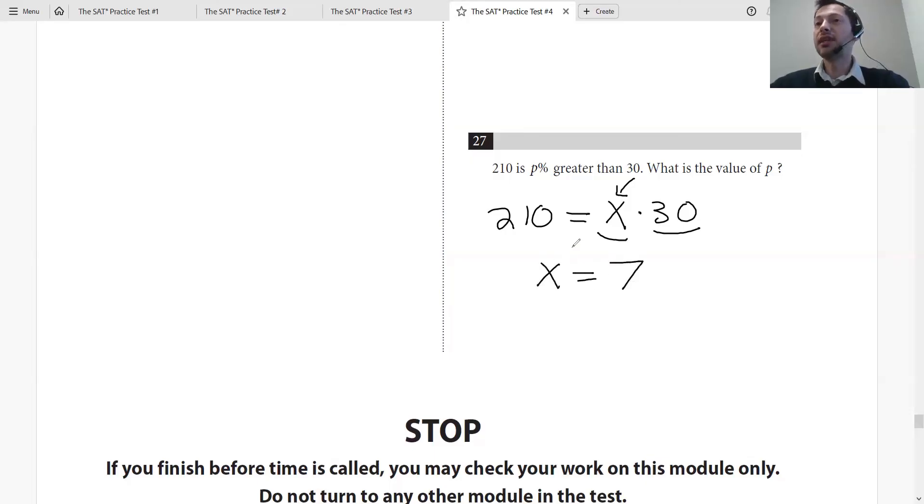Now you're saying that you're multiplying 30 times 7, which is really 7.00. What does that mean? That means you're increasing it by 600%. So p is just 600, because you're increasing by 600%. You see how we use these rules to get these seemingly complicated problems and tackle them with ease.